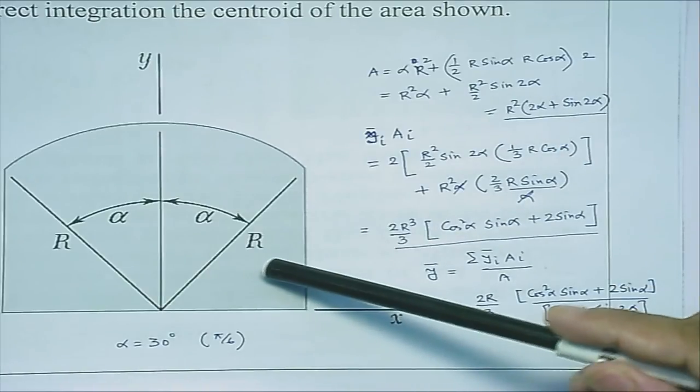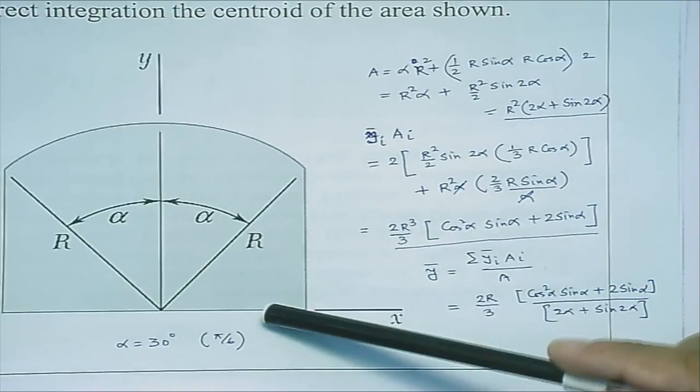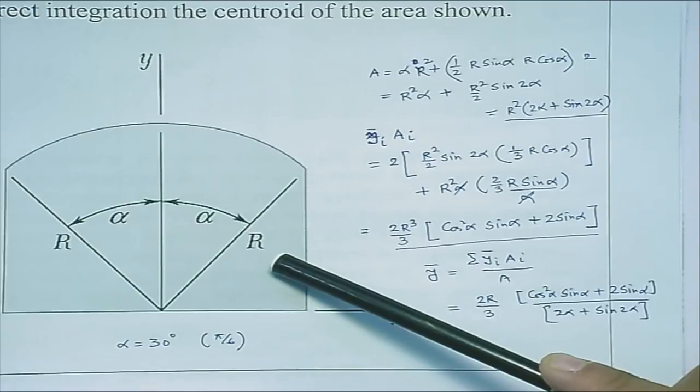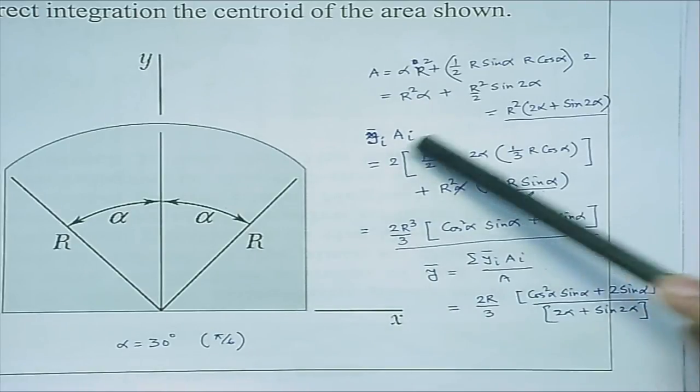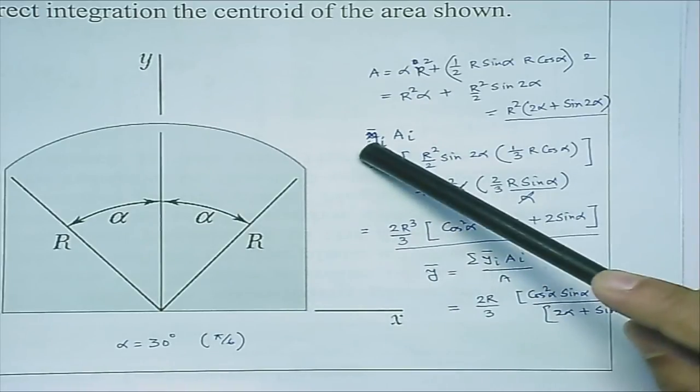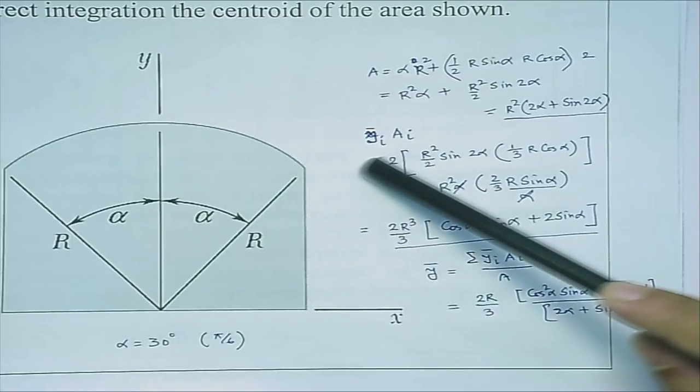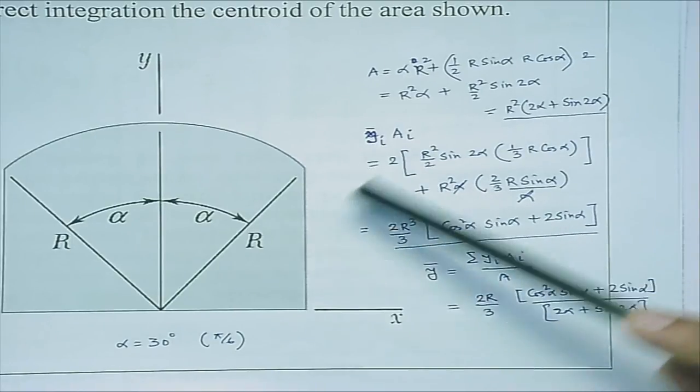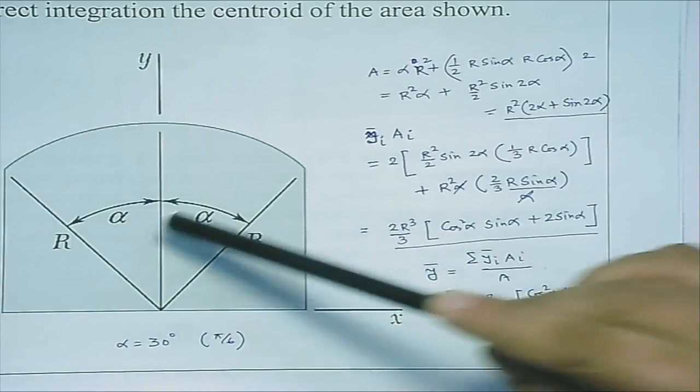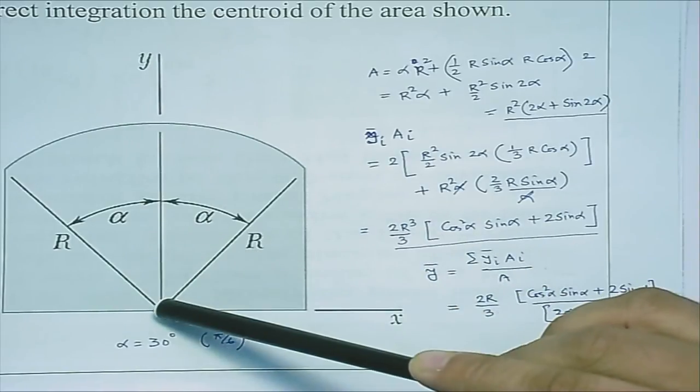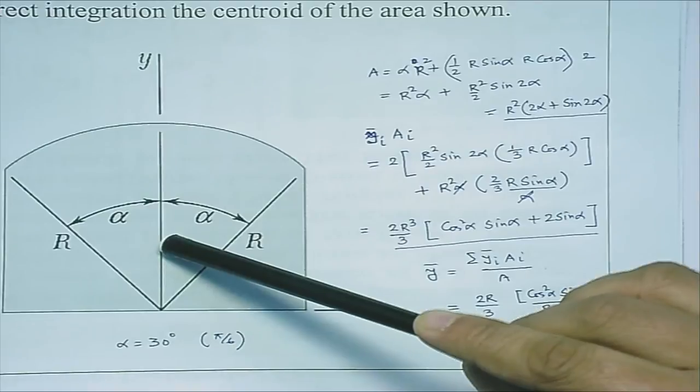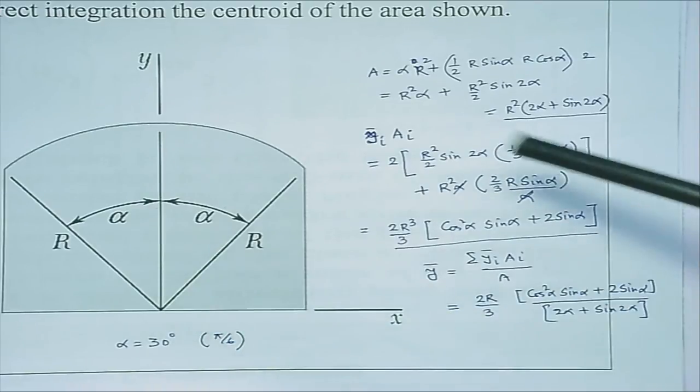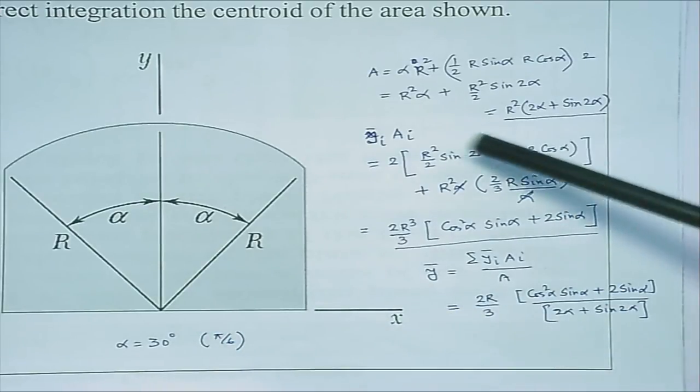Then you take the first moment of the individual area by knowing their centroid. Now I have the expression for y1 a1 plus y2 a2 plus y3 a3. What we can do: we already know the centroid of the circular sector from the vertex. That has already been done. I have used that, I know the area.